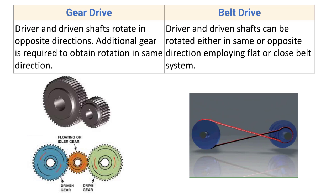In gear drive, driver and driven shafts rotate in opposite directions. An additional idler gear is required to obtain rotation in the same direction, which makes the system complex and increases cost. If the driver gear rotates clockwise, the driven gear rotates anticlockwise and vice versa. In belt drive, driver and driven shafts can rotate either in the same or opposite direction by employing a flat or cross belt system. With a flat belt, motion is in the same direction; with a cross belt, the pulleys rotate in opposite directions.